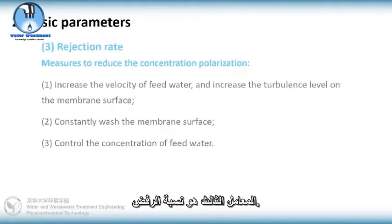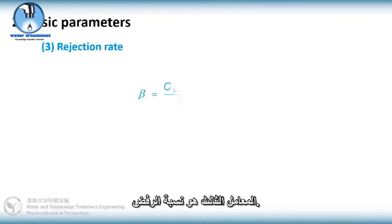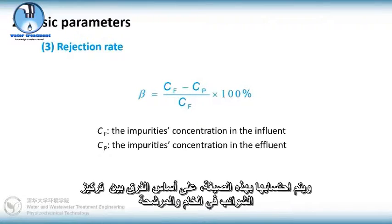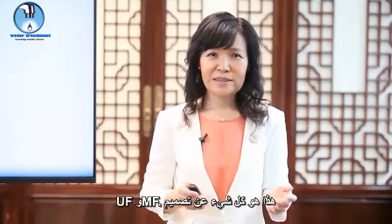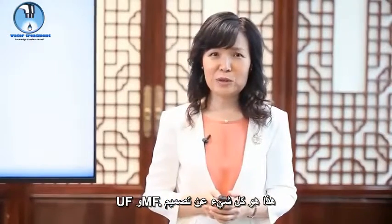The third parameter is the rejection rate. It is calculated by this formula based on the concentration difference of impurities in influent and effluent. This is all about the design of UF and MF.